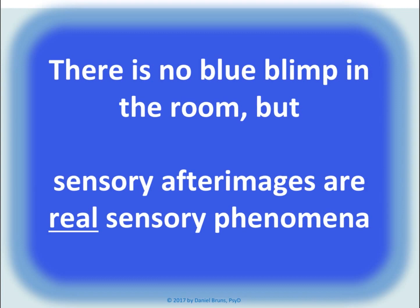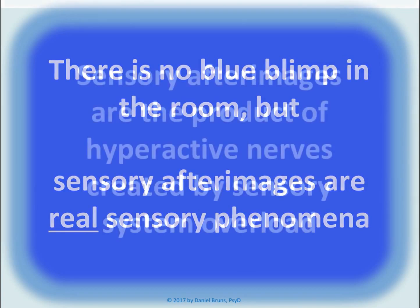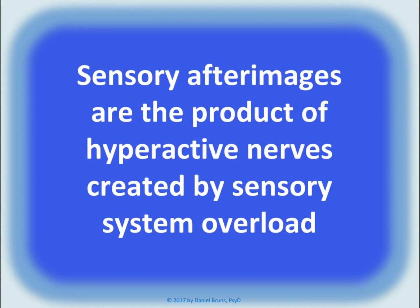Anybody staring into a strobe when it goes off will have an afterimage. Sensory afterimages are the product of hyperactive nerves created by sensory system overload. The flash was so powerful, it momentarily overloaded your optical system.